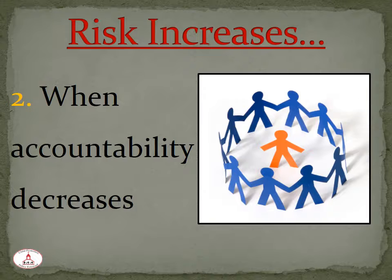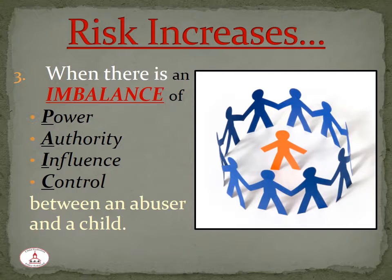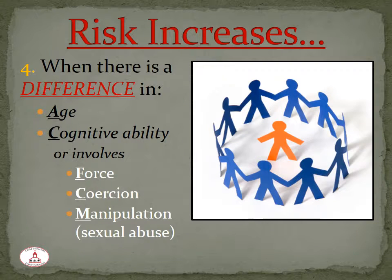Abusers watch for such opportunities. People with power, authority, influence, and control over a child are more able to use these advantages to abuse a child. Parents, who are the most frequent abusers, coaches, priests, and teachers are all in positions of authority and control over children. Combined with access to children in many settings, this leaves many children vulnerable. If there is a difference in age and or cognitive ability, risk is greatly increased. We must be especially watchful and protective of the youngest and most vulnerable in our care.